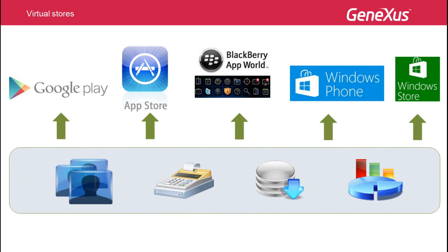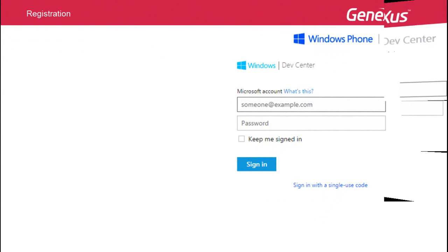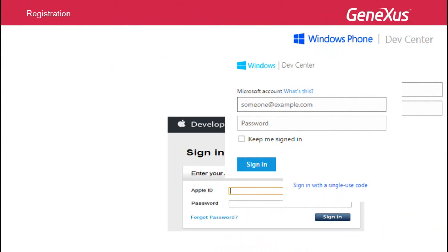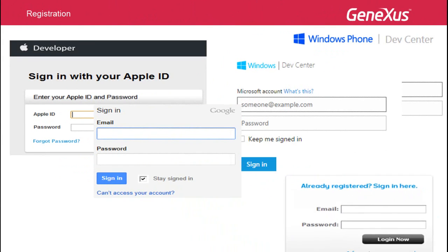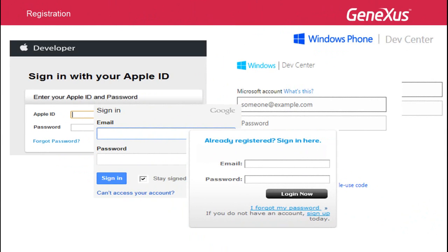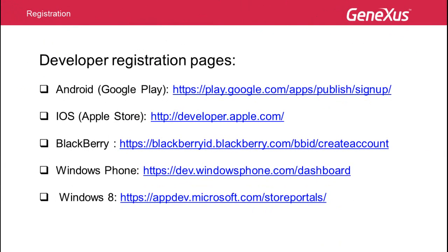In order to publish applications in virtual stores, there are three stages to fulfill. The first is registration, a mandatory requirement in all stores in order to upload and publish applications for smart devices. Here are the links to access each site.